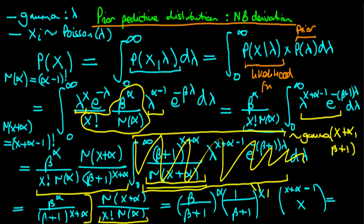This negative binomial distribution has first parameter alpha and second parameter beta. So what we've now proved is that the prior predictive distribution for the case of a gamma prior on lambda and a Poisson likelihood function is itself a negative binomial distribution.